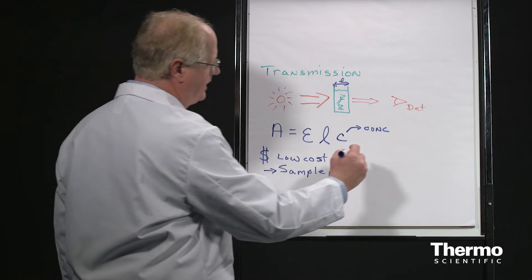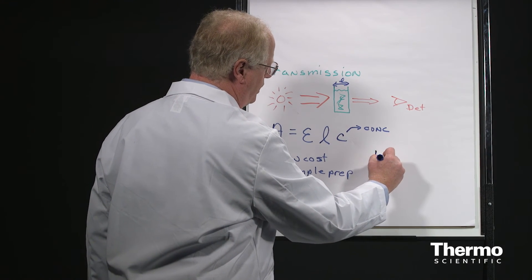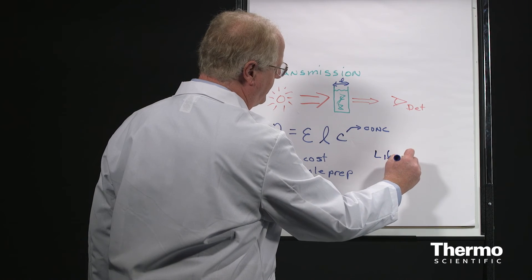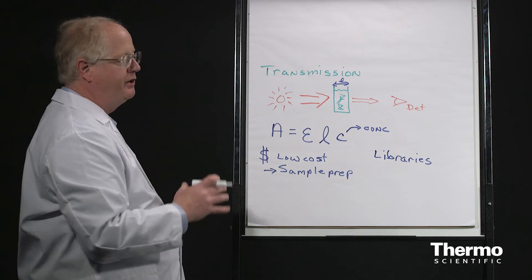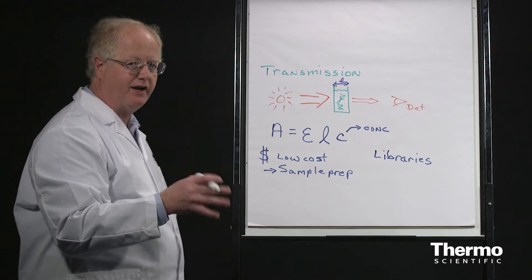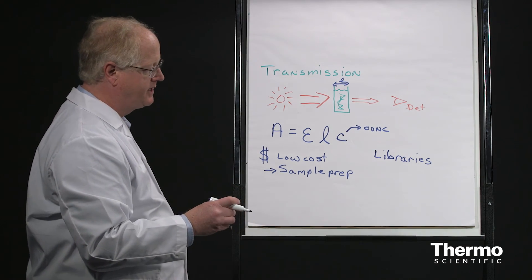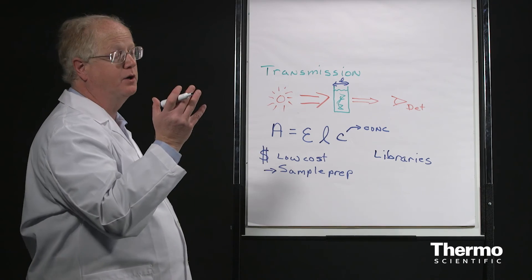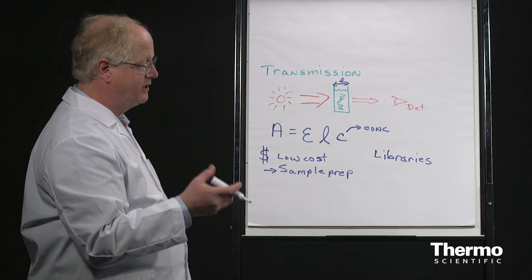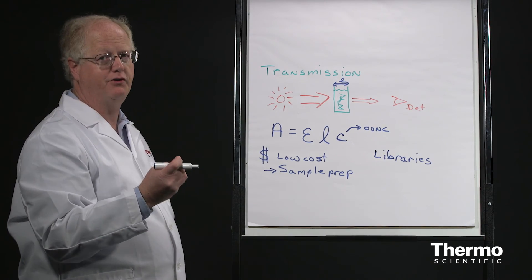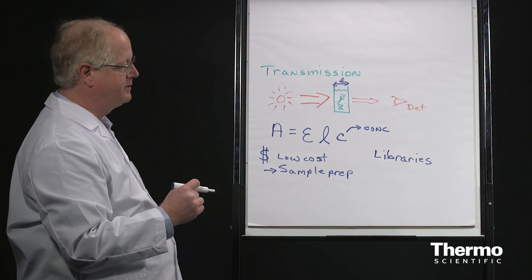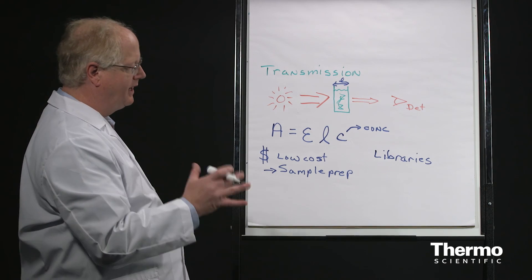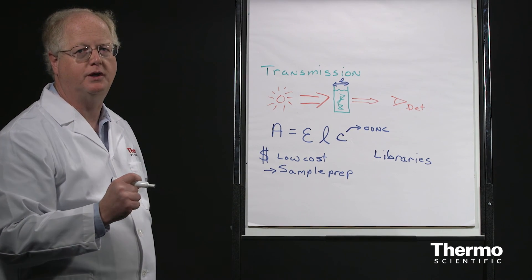Most of the libraries that you will use, most of the libraries that are commercially available, or many of them at least, were prepared using transmission. Many SOPs—standard operating procedures—such as the study of asbestos in ceiling tiles, which is done in Europe, requires you to do it by transmission. So that's a brief overview of transmission. Now let's go in the lab and see how we actually do this.